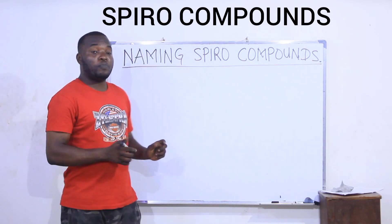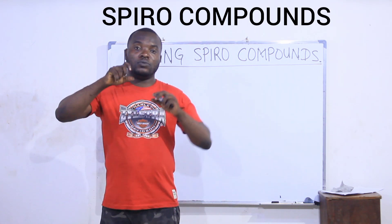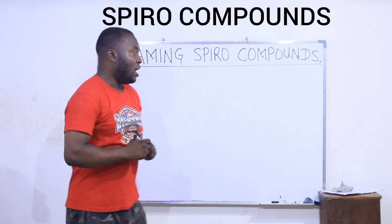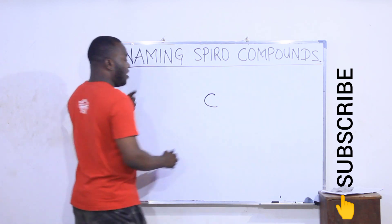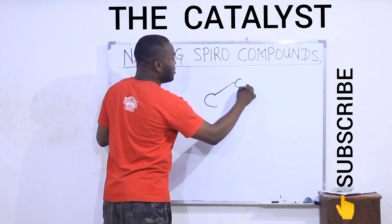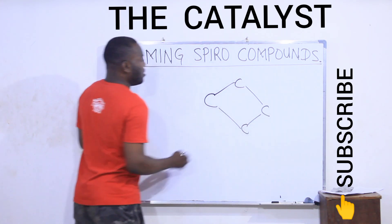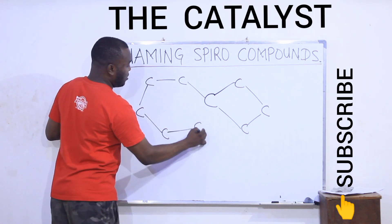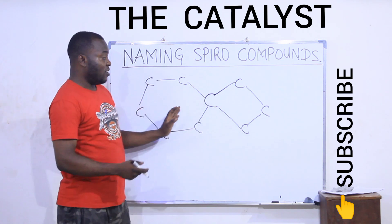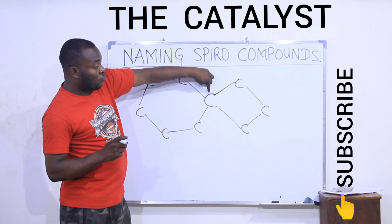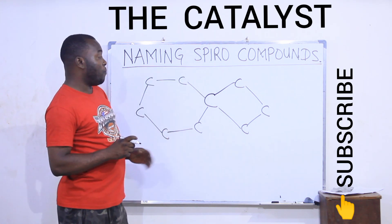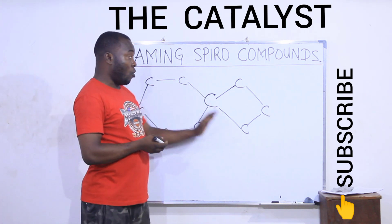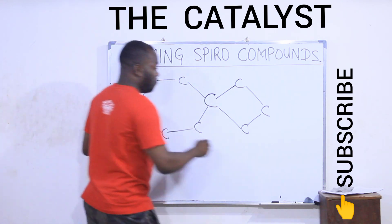A spiro compound is a compound in which a carbon atom is used to link two cyclic rings together. If I have a carbon atom at the center with one cyclic ring on each side, these two cyclic rings are connected together by a single carbon atom. Such a compound is called a spiro compound. Now let's see how to name spiro compounds.